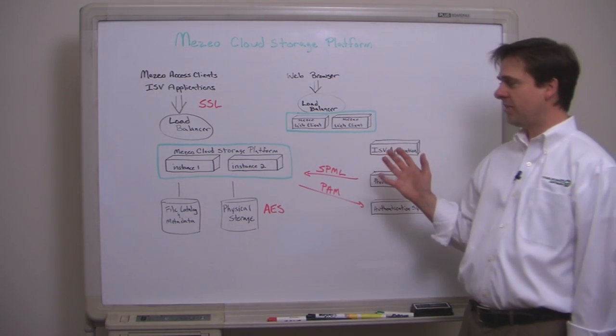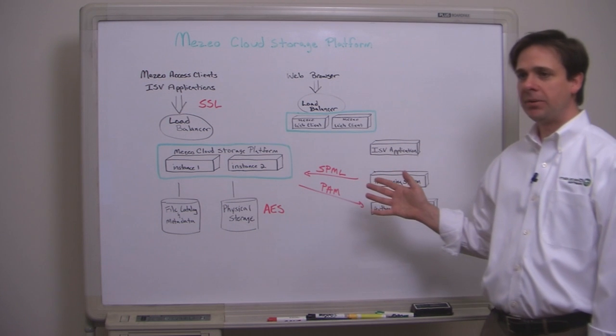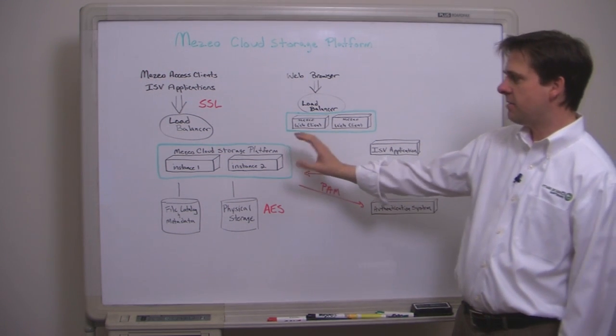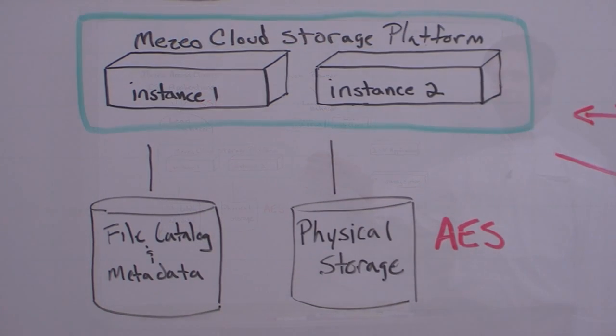On the board behind me, I have a simplified example of what a high availability deployment might look like. The main component to focus on here is the Mezio Cloud Storage Server. This is the component that actually provides the APIs to clients of the system.